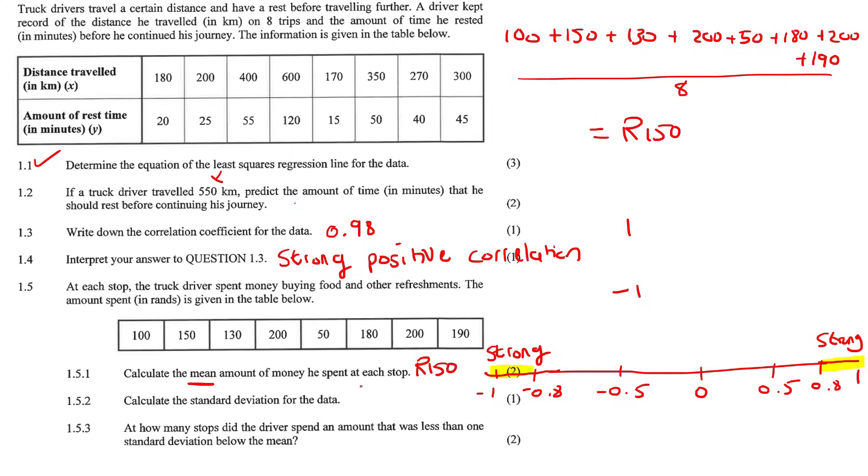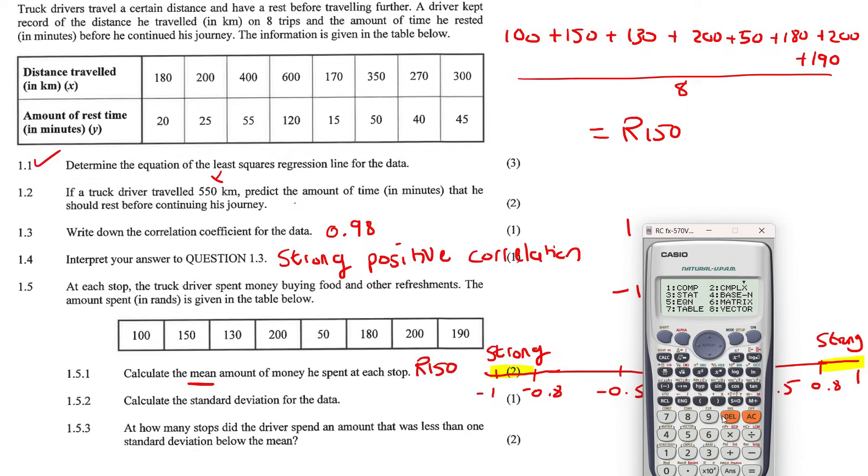Calculate the standard deviation. Now this one, we're going to put the data onto the calculator. You're going to put your calculator into stat mode. Now you're going to use the grade 11 of 1 minus VAR. You're going to input your data, 100, 150, 130. You get the idea. Once all the data has been input, you can press AC, press shift, press 1.